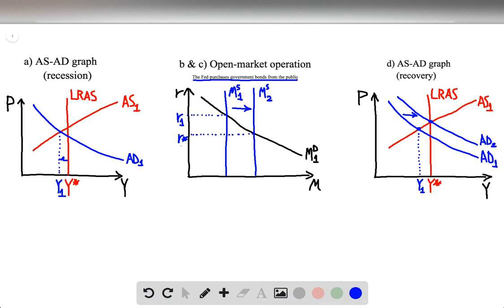And the Fed, through its open market operations, is shifting the money supply curve from MS1 to the right, to MS2.